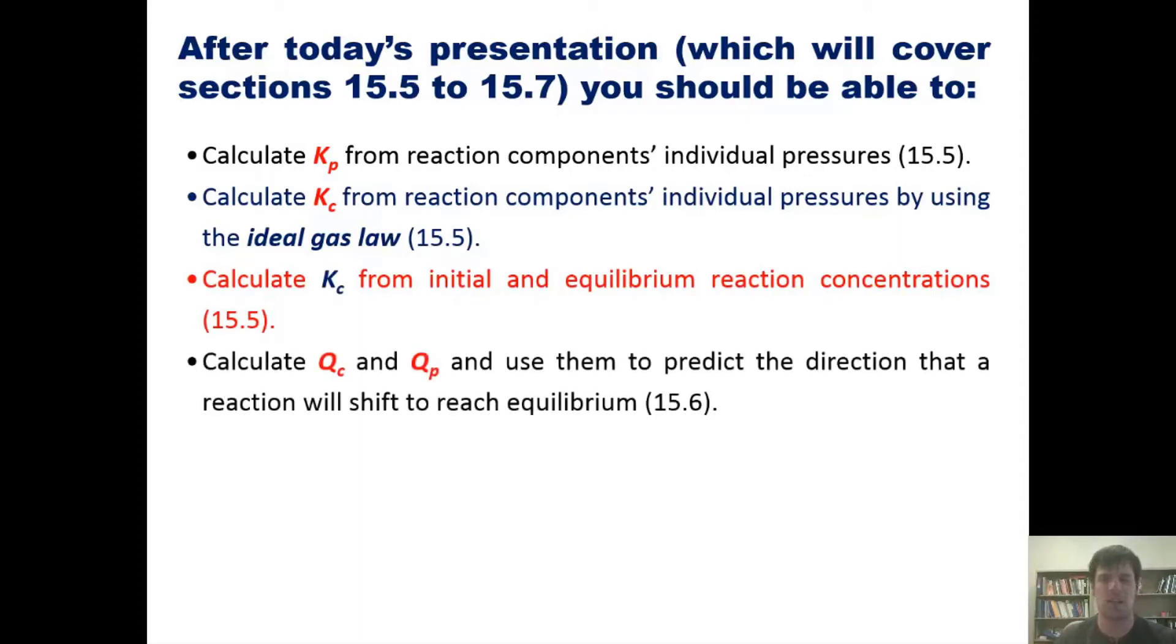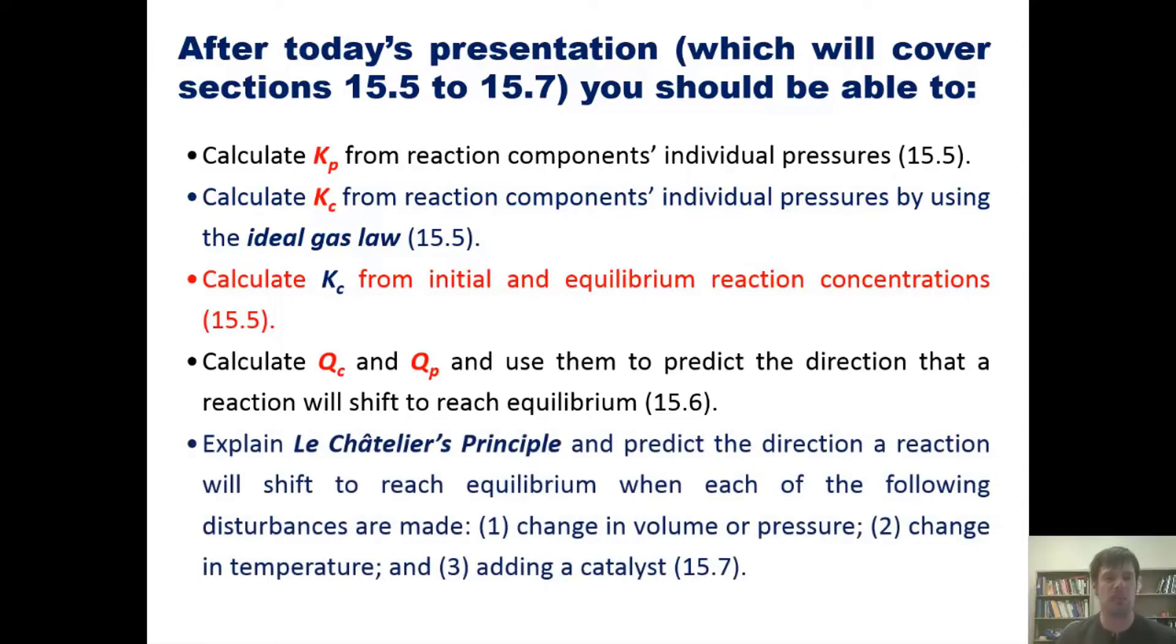Fourth, calculate Qc and Qp and use them to predict the direction the reaction will shift to reach equilibrium. And fifth, explain Le Chatelier's principle and predict the direction the reaction will shift to reach equilibrium when each of the following disturbances are made: first, change in volume or pressure; second, change in temperature; and third, by adding a catalyst. That's the lineup.